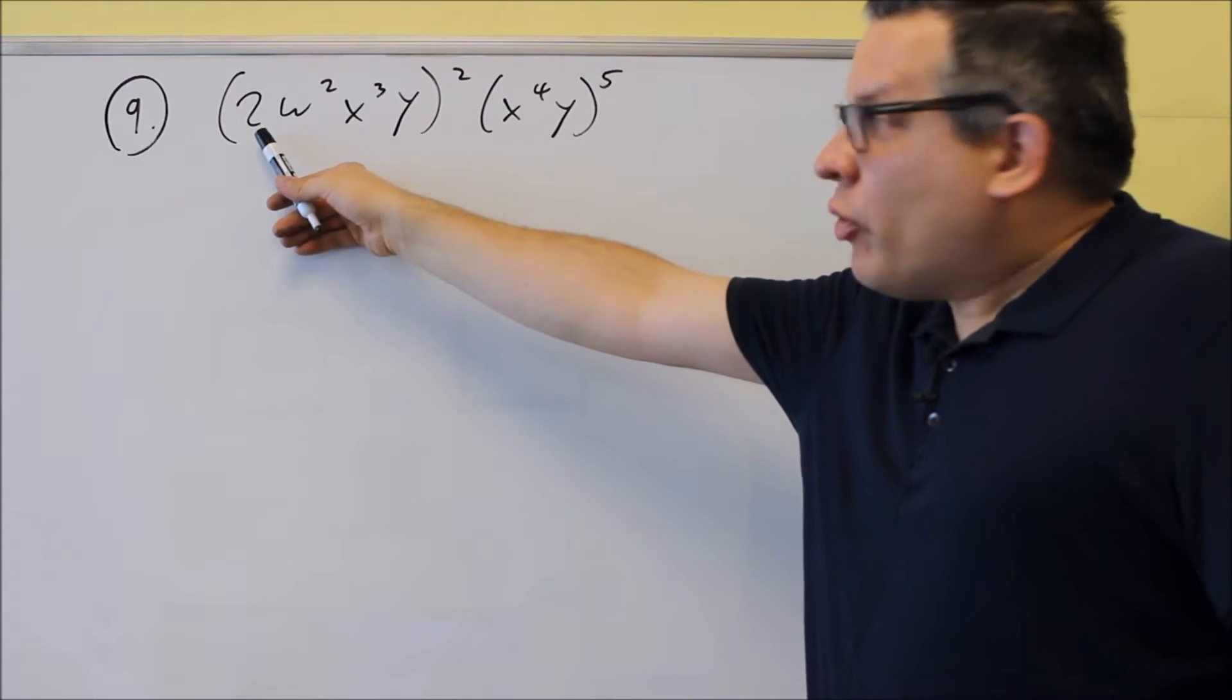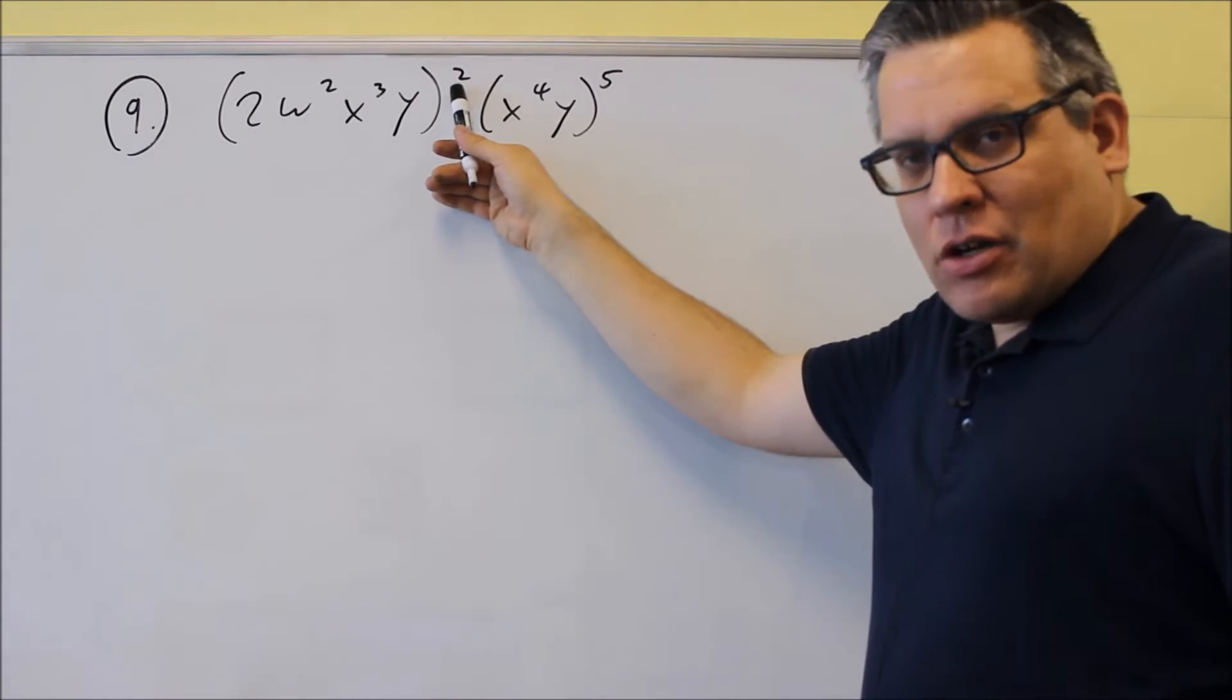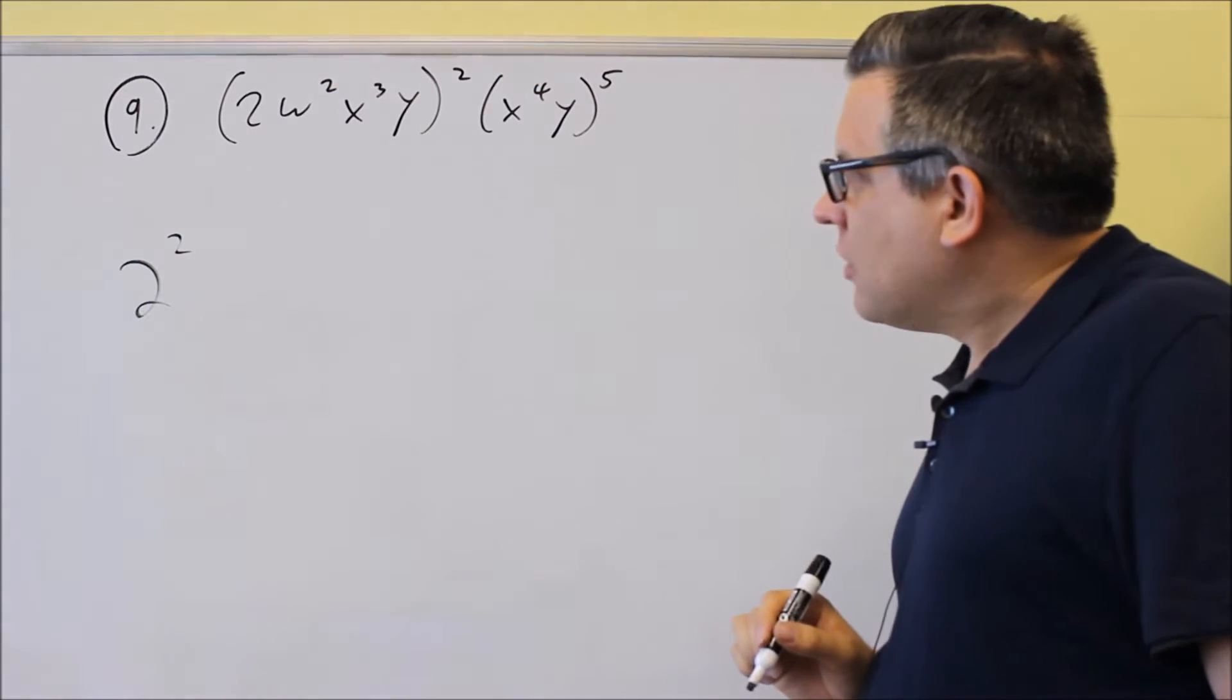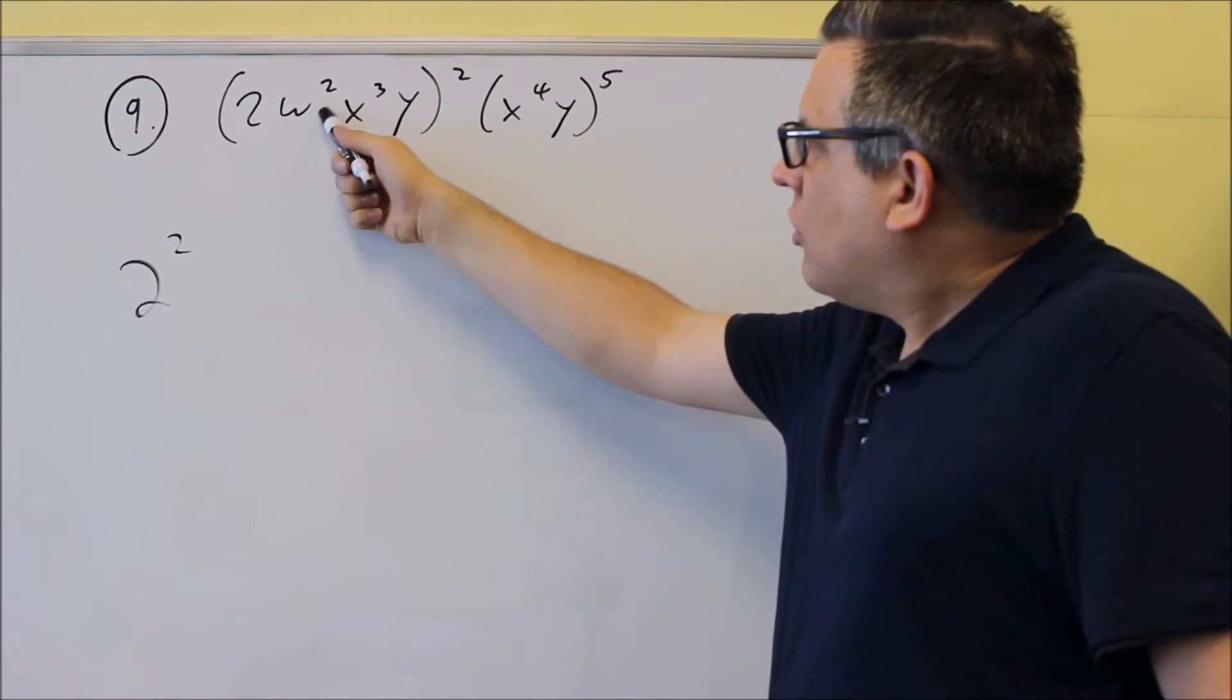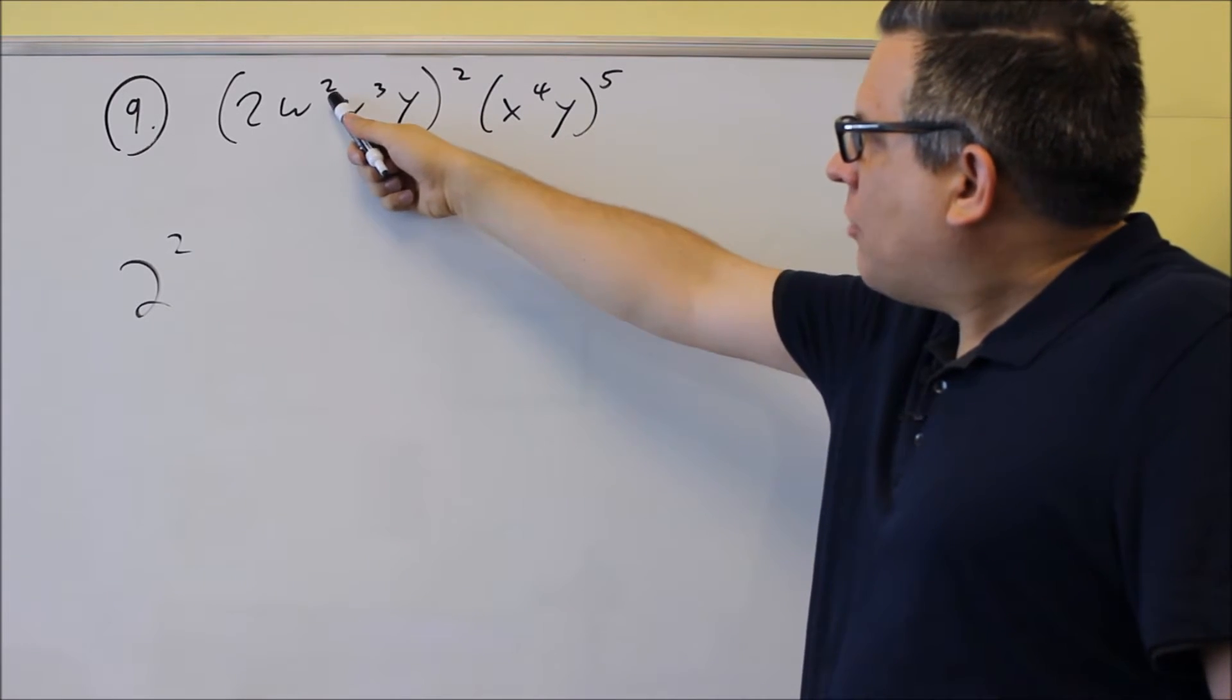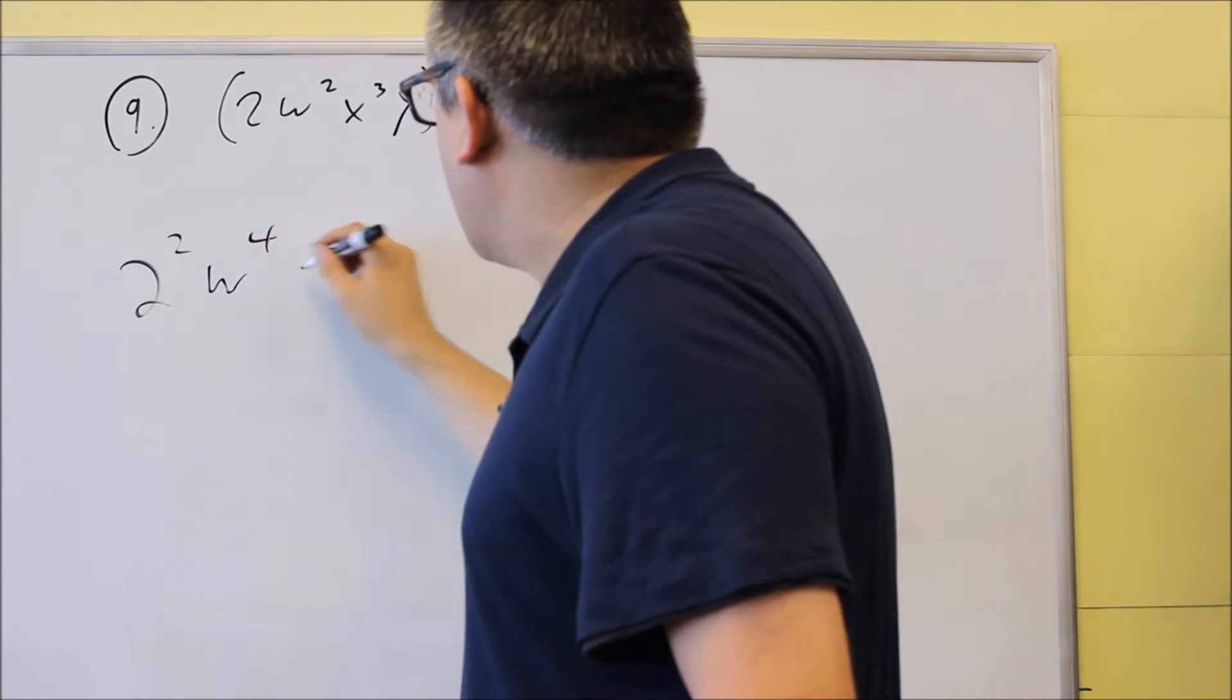Again, we said before that if you have a number, that's going to be raised to the power on the outside as well. So I have 2 squared, and I have W squared squared. So if I'm raising a power to another power, you multiply exponents. So this is going to be W to the fourth power.